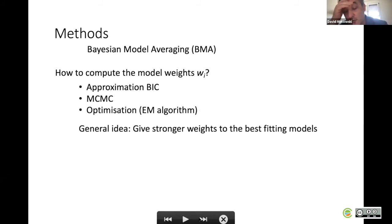A key issue is to estimate accurately the different weights. You have one weight per model. There are different approaches in the literature to compute these weights. You have an approximation from a Bayesian information criterion, the Markov Chain Monte Carlo approach, and the possibility to optimize the weights to maximize the likelihood. That's the approach used here. The general idea is to give stronger weights to the best fitting models.